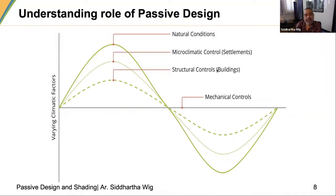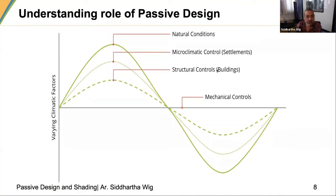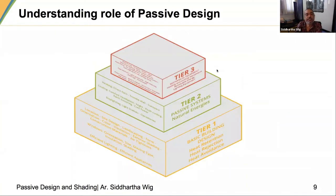This graph shows varying climatic factors. The outermost dark green represents natural conditions. By doing control at the settlement and planning level you achieve microclimatic controls; by structural controls and buildings you bring it still closer; and eventually mechanical controls are needed. Today's lecture will concentrate on the microclimatic and structural controls.